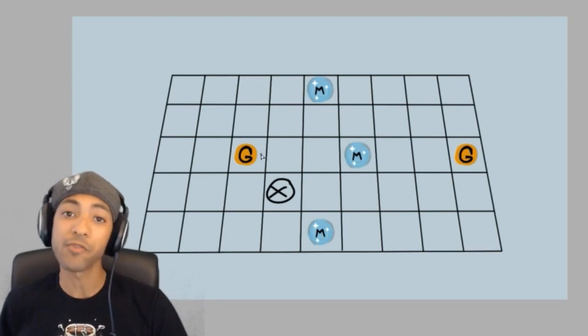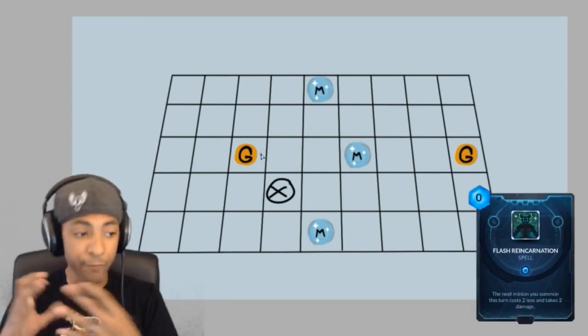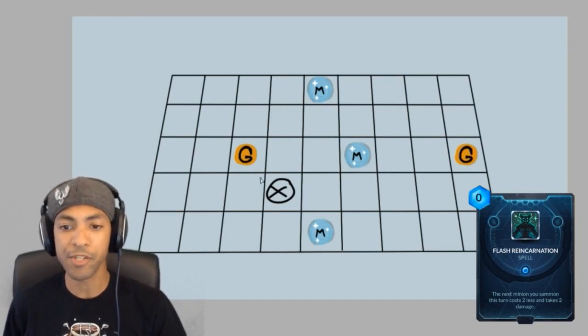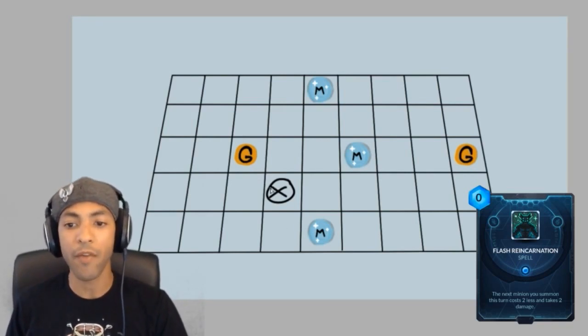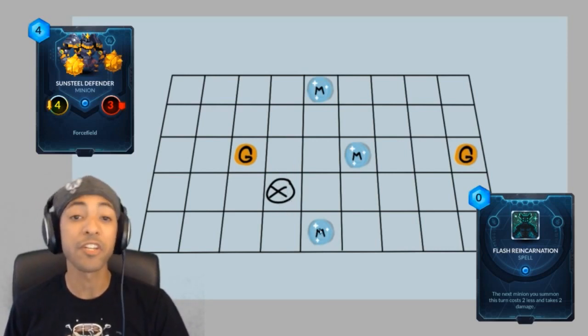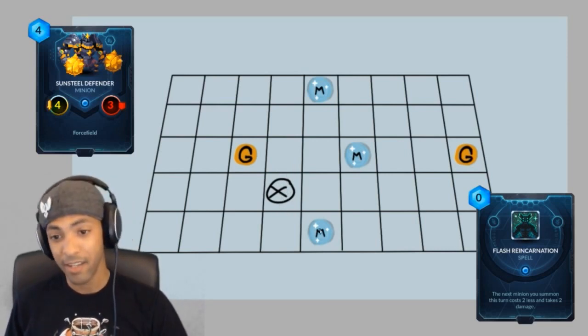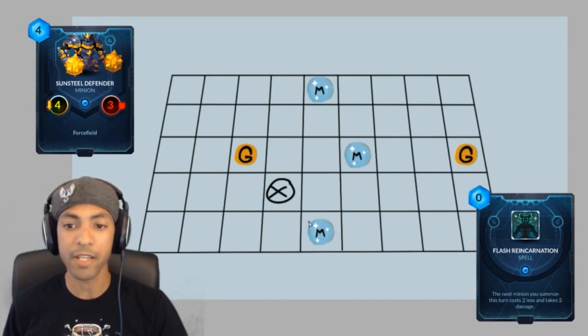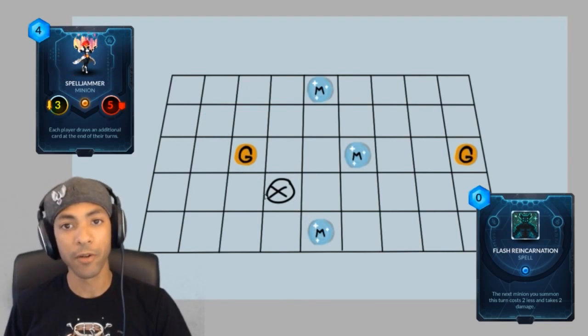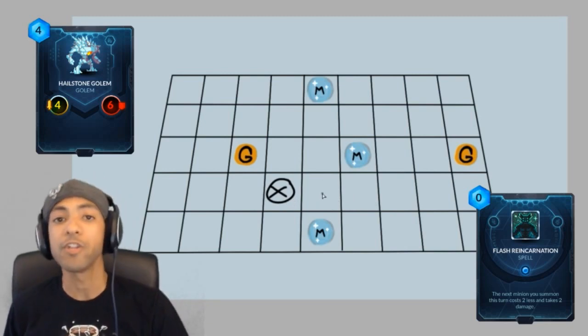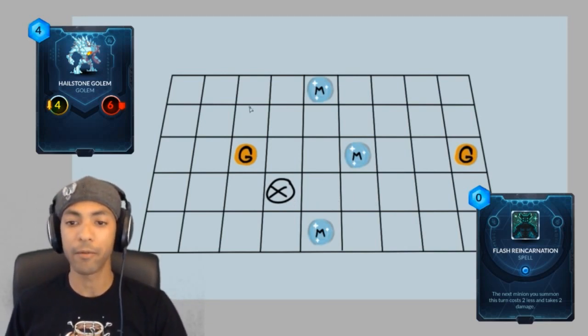If you're playing Magmar, there is a chance that you can use Flash Reincarnation to bring out a four mana minion on turn one. The most common card that you will see as part of that play would be the Sunsteel Defender, which is another great budget card because it's neutral and can go into any deck. It's really solid if you do have room for it. So Sunsteel Defender, Spelljammer, Hailstone Golem - these are great four mana minions that you're going to be seeing as Flash Reincarnation targets from Magmar.